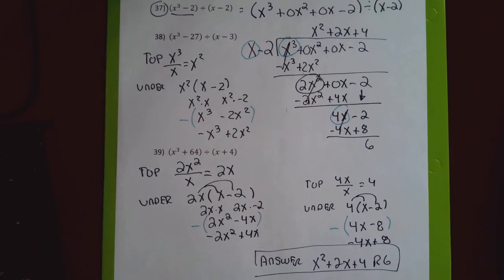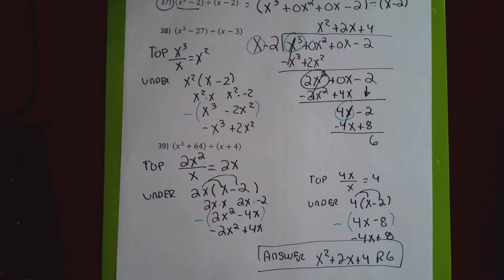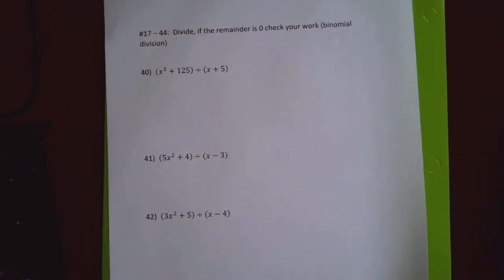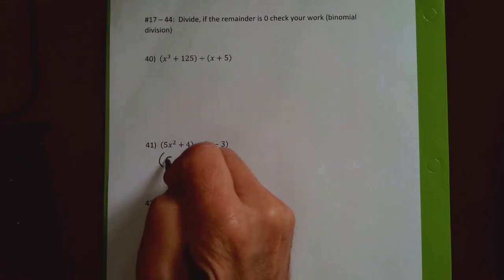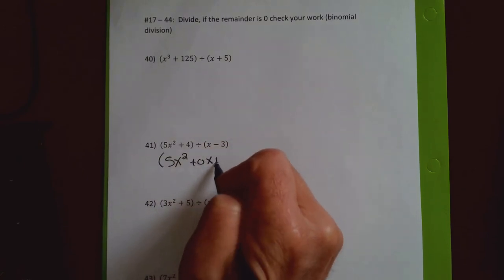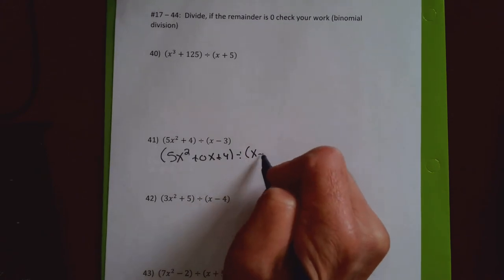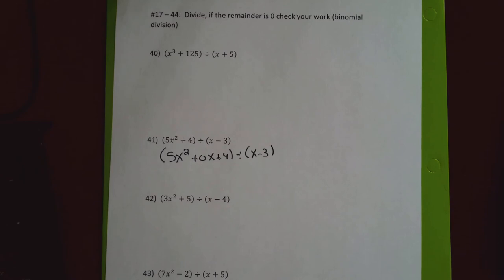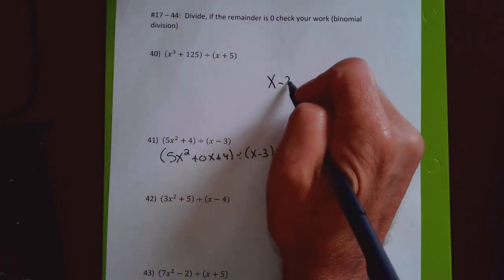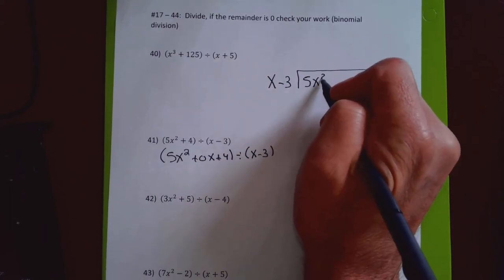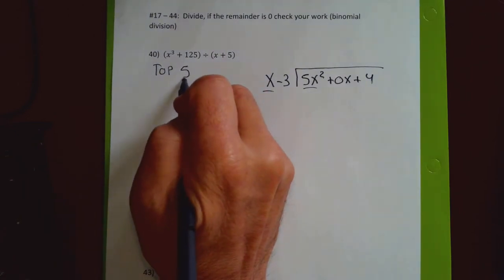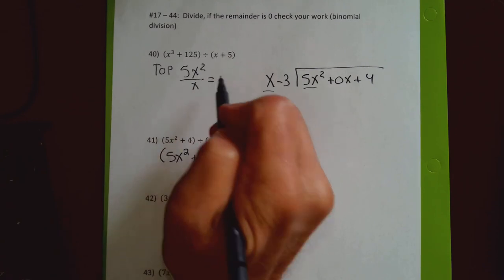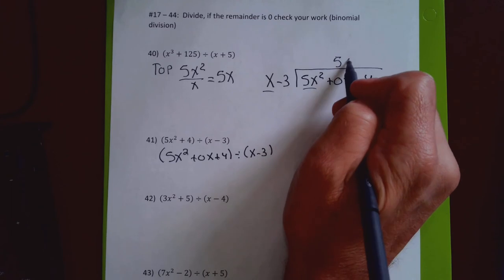There is a way to check when you have a remainder, but it's kind of clunky, so I usually don't. You can try problem 41 without me — pause the video and check. I don't put these last few problems on the test, which is why I'm doing them with you since they're more confusing. For problem 41, I need to think of this as x minus 3 divided into 5x squared plus 0x plus 4. I need a placeholder for every power of x, so I add in the 0x.